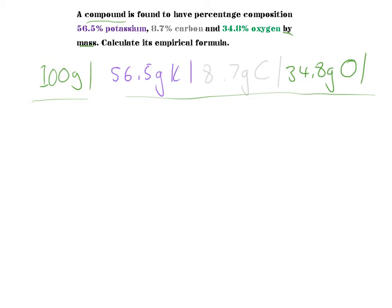If I look at my periodic table, potassium has a relative atomic mass of 39.1, which is also its molar mass. Carbon has a molar mass of 12.0, and oxygen has a molar mass of 16.0.